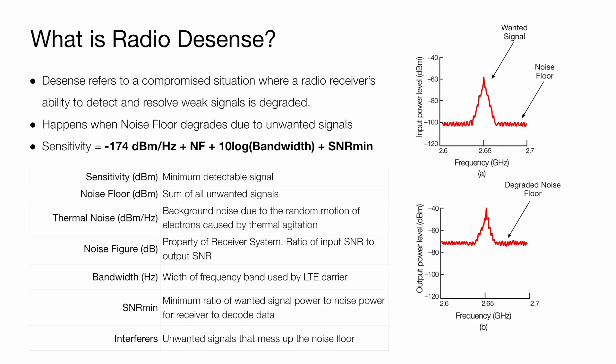Desense typically happens when the noise floor increases around the signal of interest. The noise floor here being the sum total of thermal noise, the noise figure, and the unwanted signal. When desense happens, the receiver is unable to resolve the difference between the noise and the signal of interest.